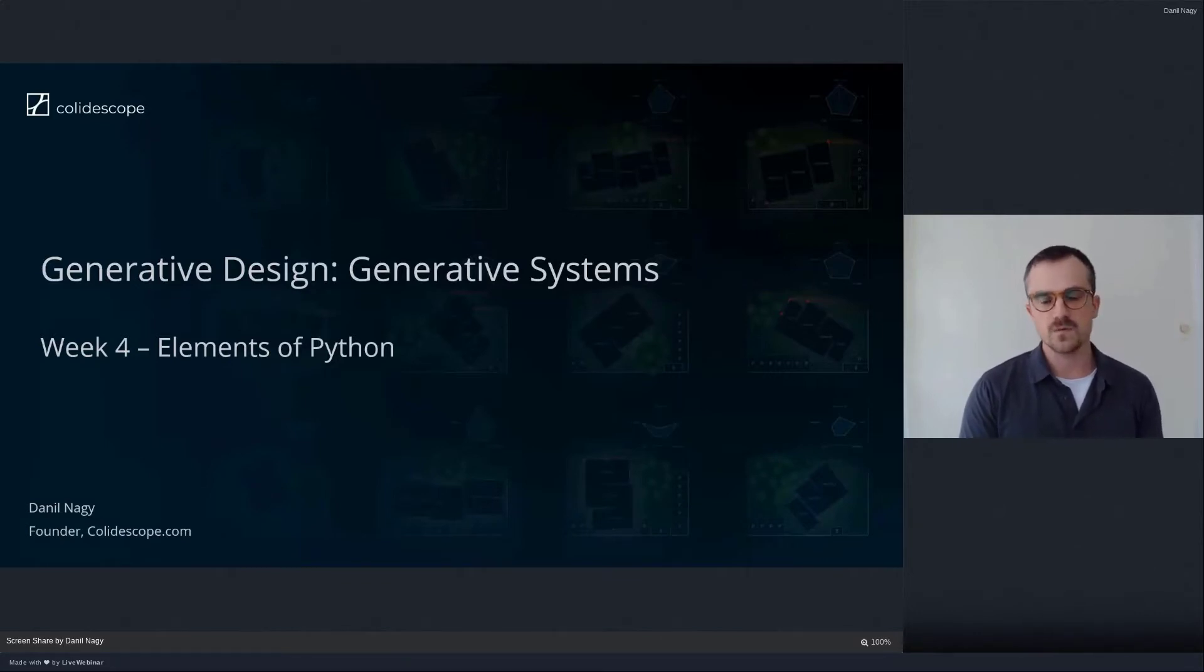Last week we went over the basics of Python and how we can integrate Python code into our Grasshopper models. We also did a quick demo showing an example of how we can use Python to add capabilities to our Grasshopper models with a simple attractor point example.